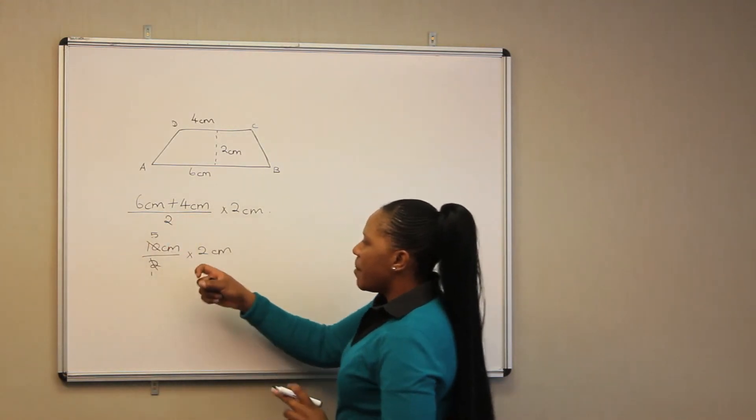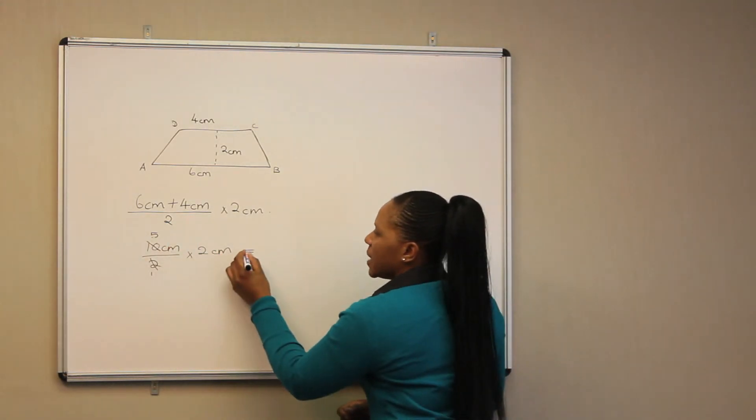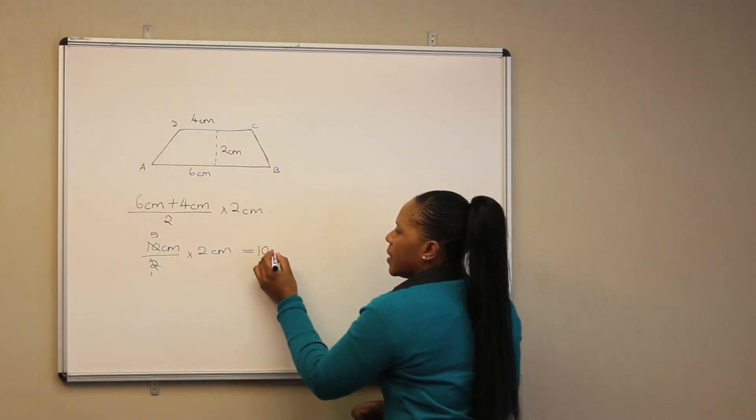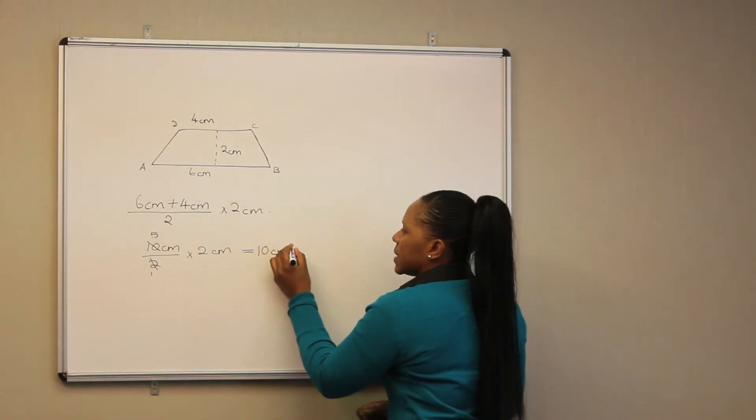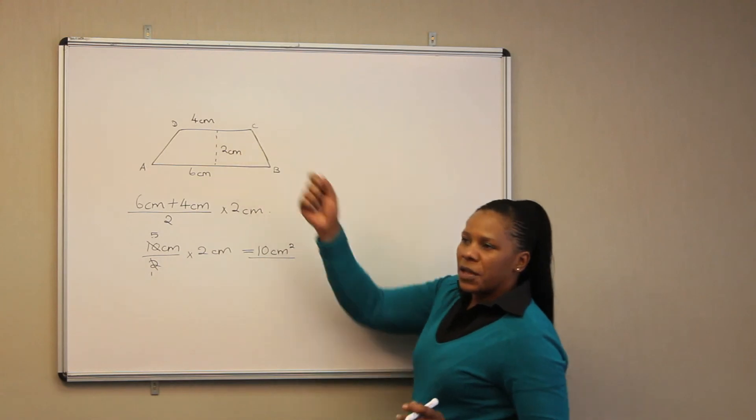So 5 multiplied by 2, we get our answer as 10 square cm. This is the area of the trapezium.